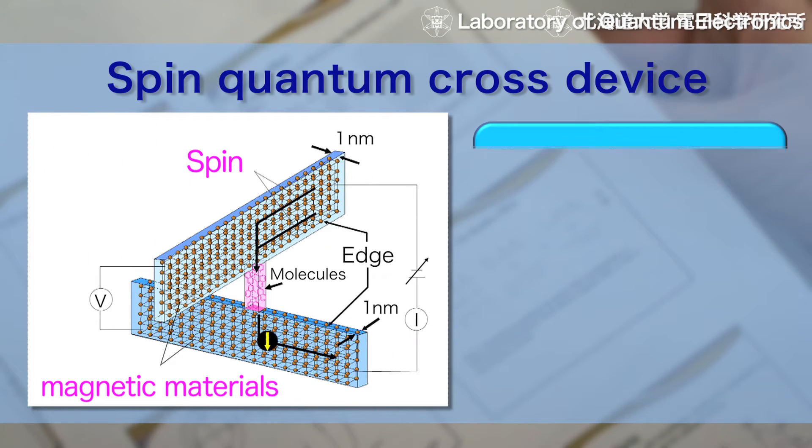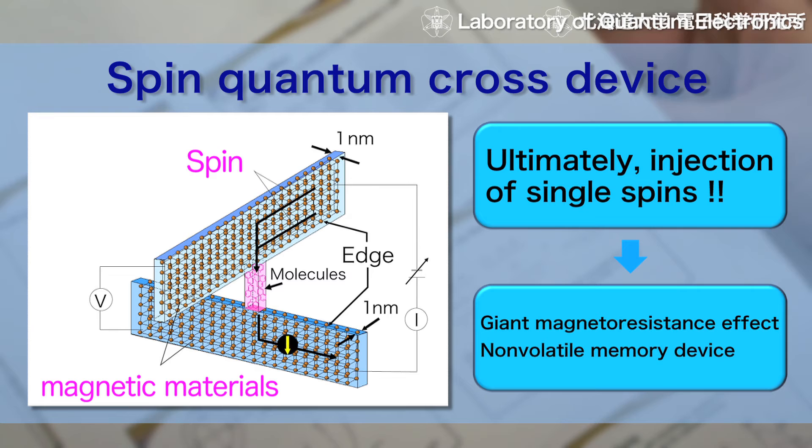Ultimately, this might make it possible to inject single spins. As an application, this research may also lead to the fabrication of giant magneto-resistance devices.